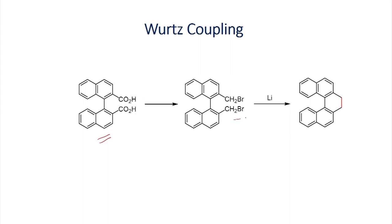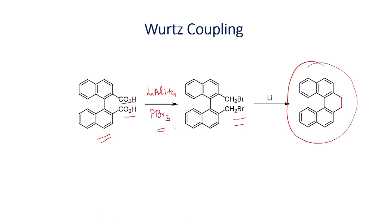Now let us look at one example of the Würtz coupling. The reaction of this dihalo compound to give a cyclic derivative is shown. First, the carboxylic acid is reduced to an alcohol using lithium aluminum hydride, which is further converted into the corresponding alkyl bromide. Once we have this, it can be reacted — as we have seen — by treating an alkyl halide with two equivalents of lithium to generate the corresponding alkyl lithium, which can undergo intramolecular cyclization to give the C-C bond formation.